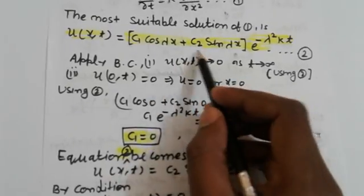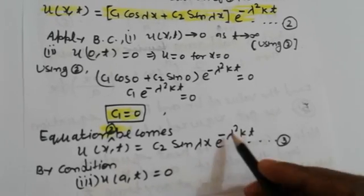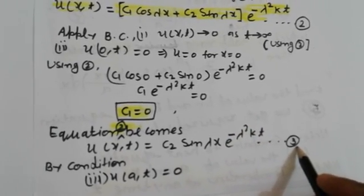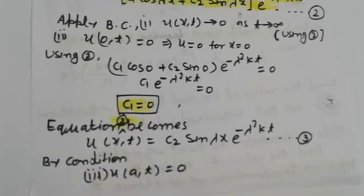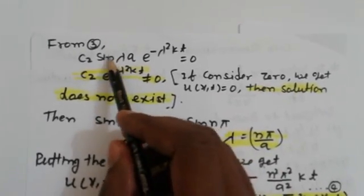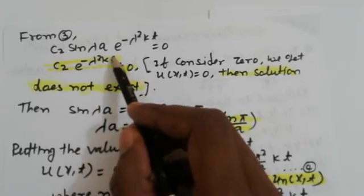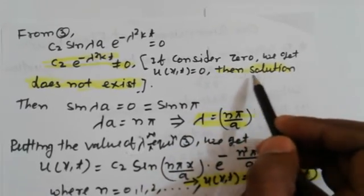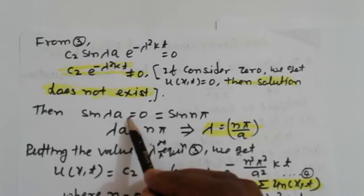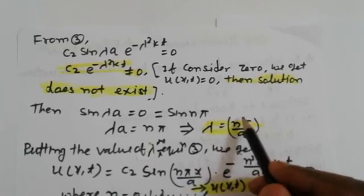Setting c₁ = 0, equation (2) reduces to u(x,t) = c₂ sin λx · e^(−λ²kt), labeled equation (3). Applying boundary condition (3): u(a,t) = 0. From equation (3), c₂ sin λa · e^(−λ²kt) = 0. Since c₂ · e^(−λ²kt) ≠ 0 (otherwise the trivial solution results), we require sin λa = 0, so λa = nπ, giving λ = nπ/a.